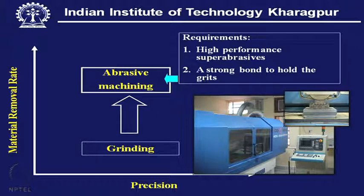This is the characteristic of machining by a cutting tool. On the other hand, if we see the situation with grinding, we can see the precision is quite high, but the material removal rate is not adequate. So machining by a cutting tool and machining by an abrasive tool have their own domain of application.